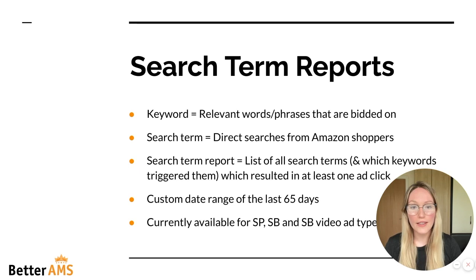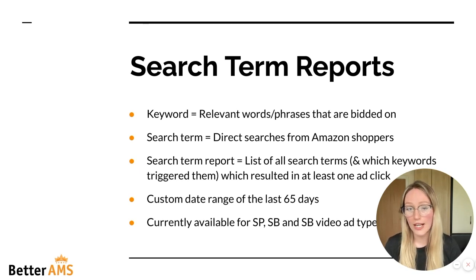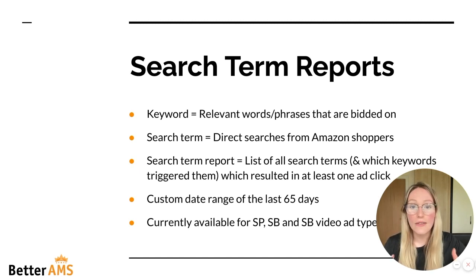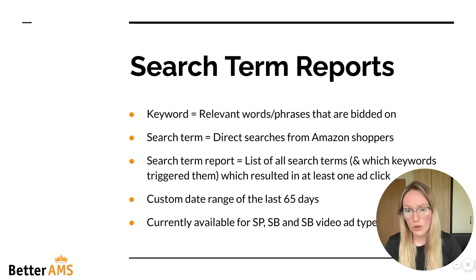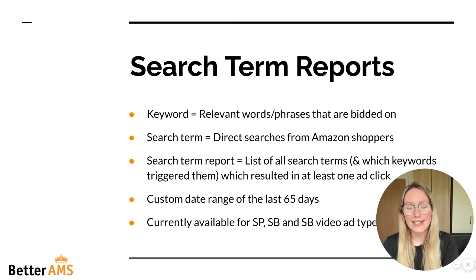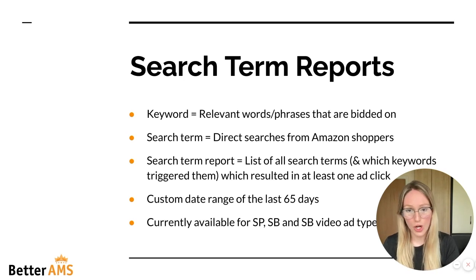It's really important to clarify the differences between a keyword and a search term, because you can also download a keyword report from Amazon. Keywords are the relevant words or phrases that you are bidding on — the keywords that are in your campaigns, either broad, phrase, or exact match. A search term is the direct search coming from your Amazon shoppers who are clicking on your ads.